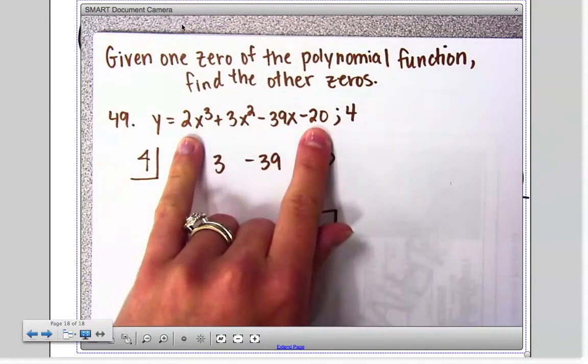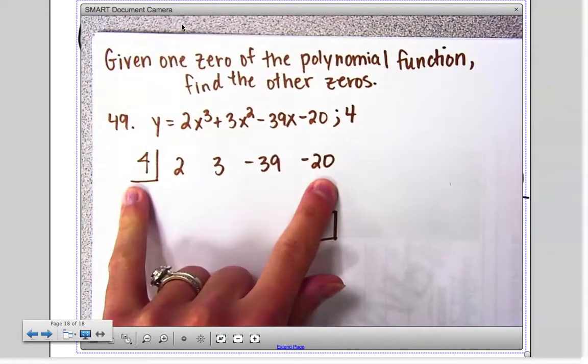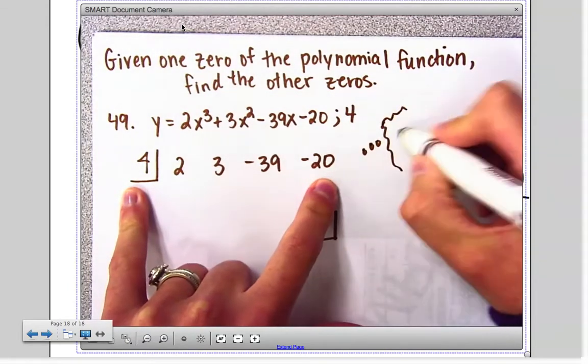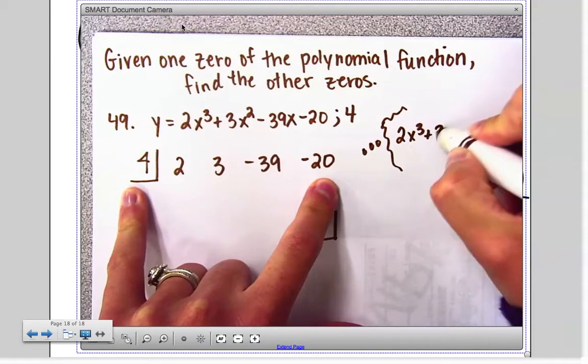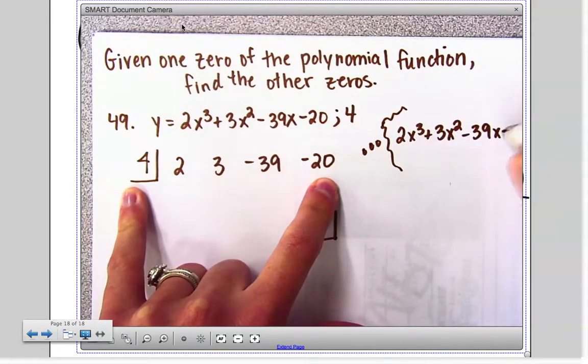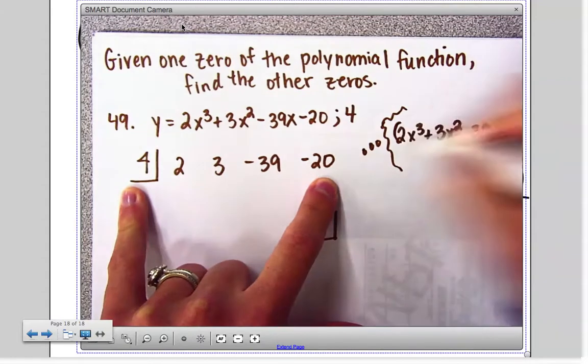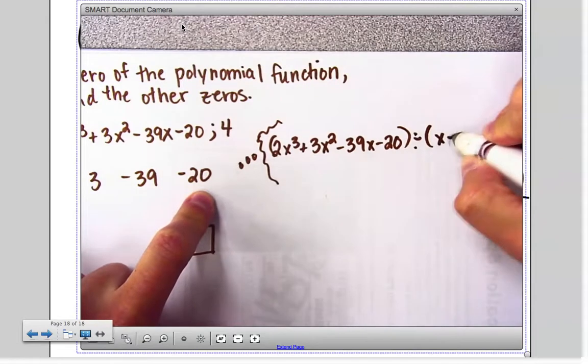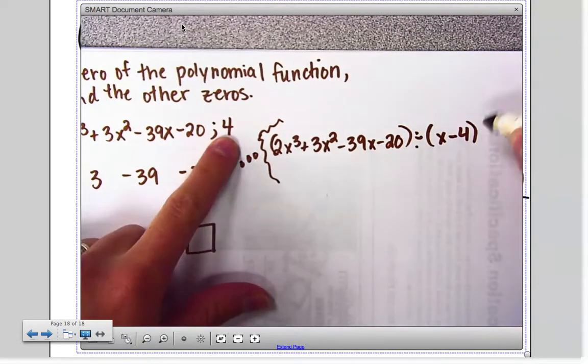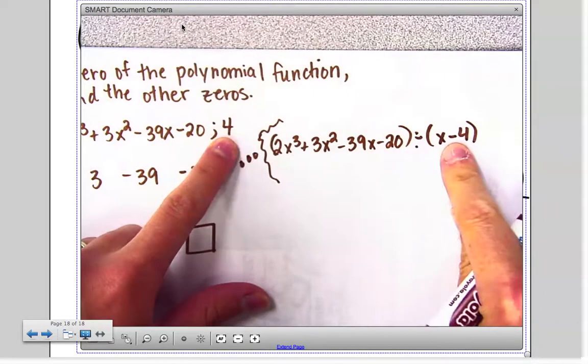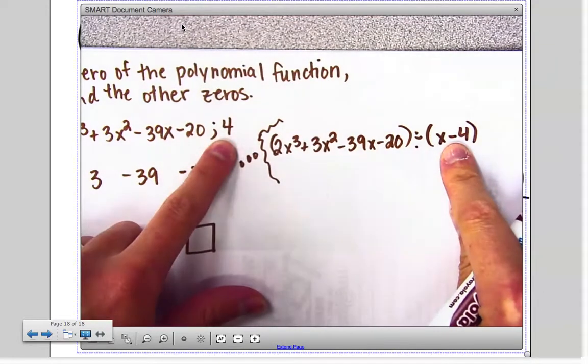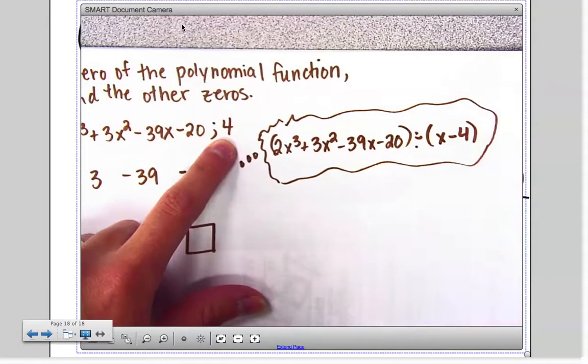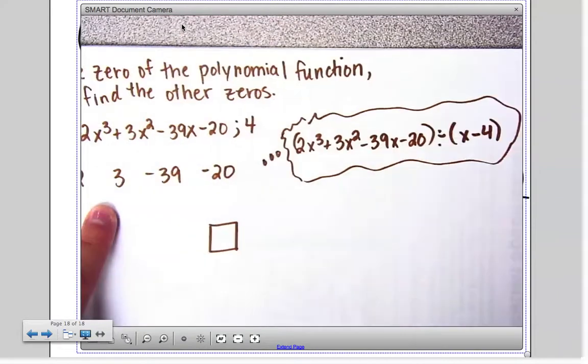Now this is also the process of synthetic division, so at the same time when I'm doing this, I'm doing 2x to the third plus 3x squared minus 39x minus 20, I'm taking that and I'm dividing it by a factor of x minus 4. Now why do I switch that? Because if x minus 4 was a factor, then I would get 4 as that x-intercept.